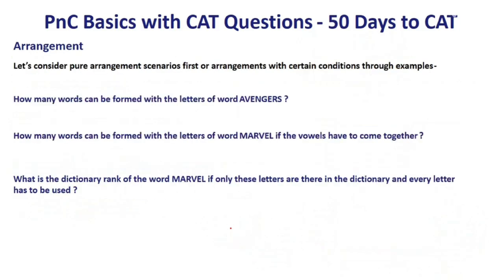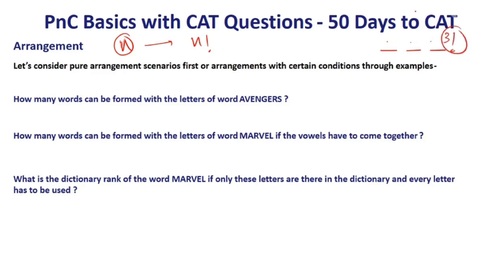Talking about arrangement — if I have N things to arrange, the number of arrangements is simply N factorial. For example, if I have 3 desks and 3 friends, the number of ways to seat them is 3 factorial.